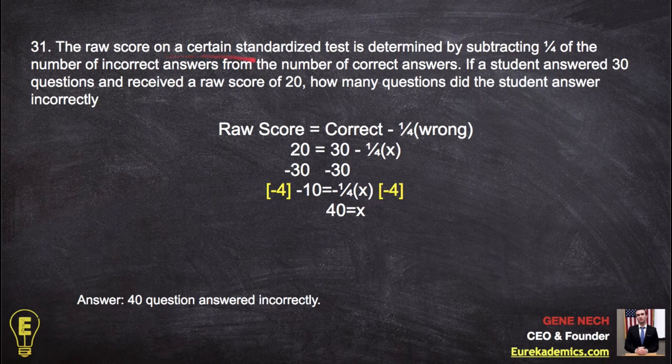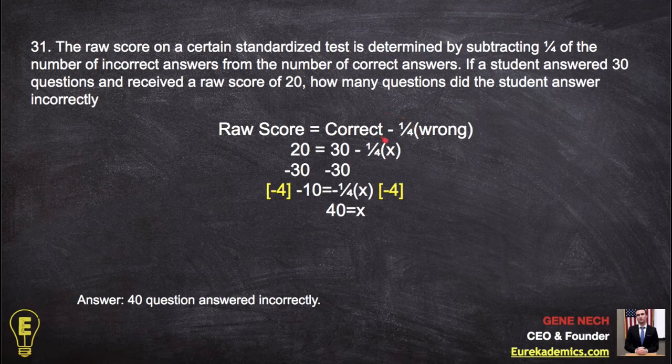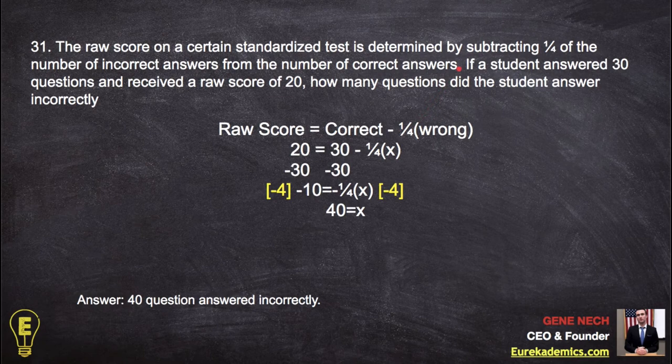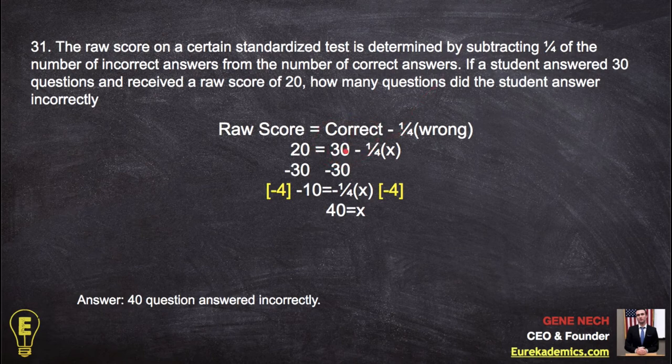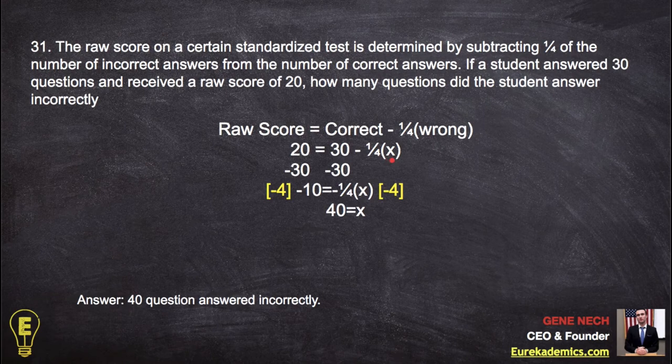Number 29. The raw score of a certain standardized test is determined by, okay, here we go. Raw score equals subtracting 1 fourth of the number, subtracting 1 fourth of wrong from the number of correct. So you have raw score equals correct minus 1 fourth times wrong. Really critically, you go one thing at a time. If a student answered 30 questions, what does that mean? You got 30 questions correct. So I substitute. And received a raw score of 20, substitute. How many questions did the student answer incorrectly? 1 fourth x. Perfect.